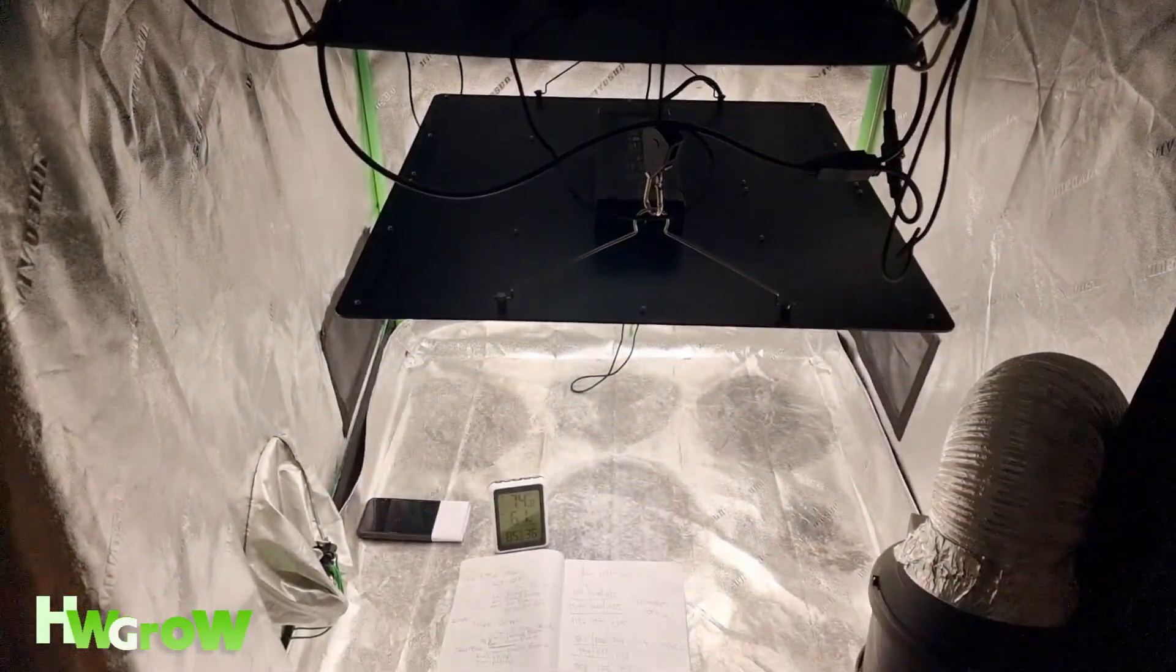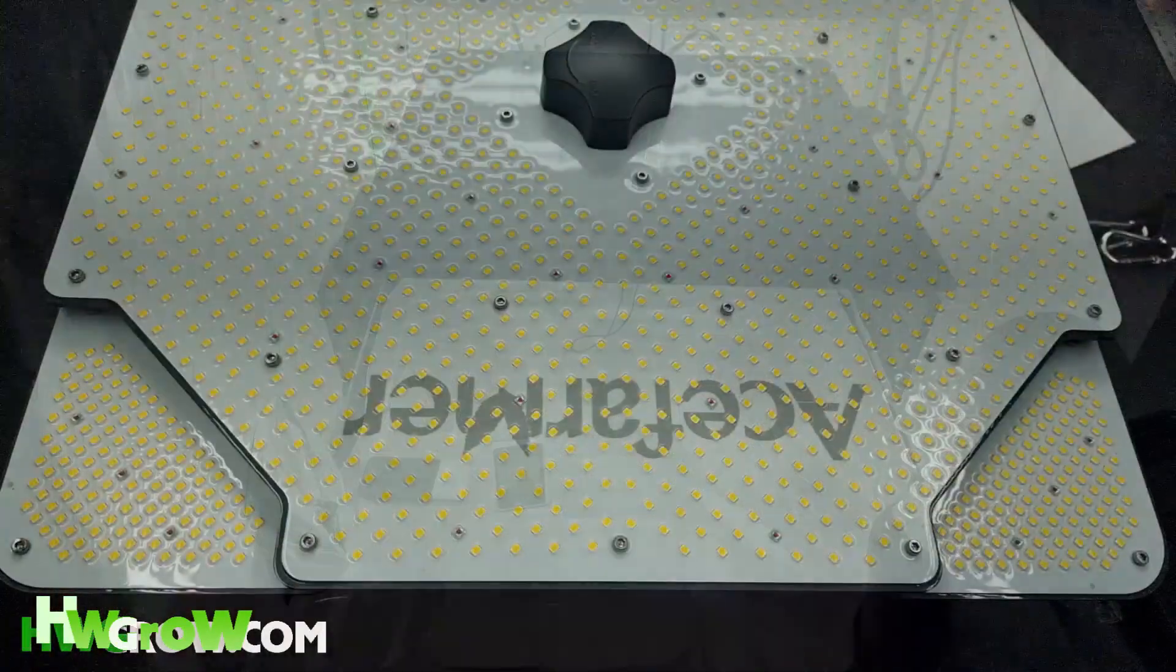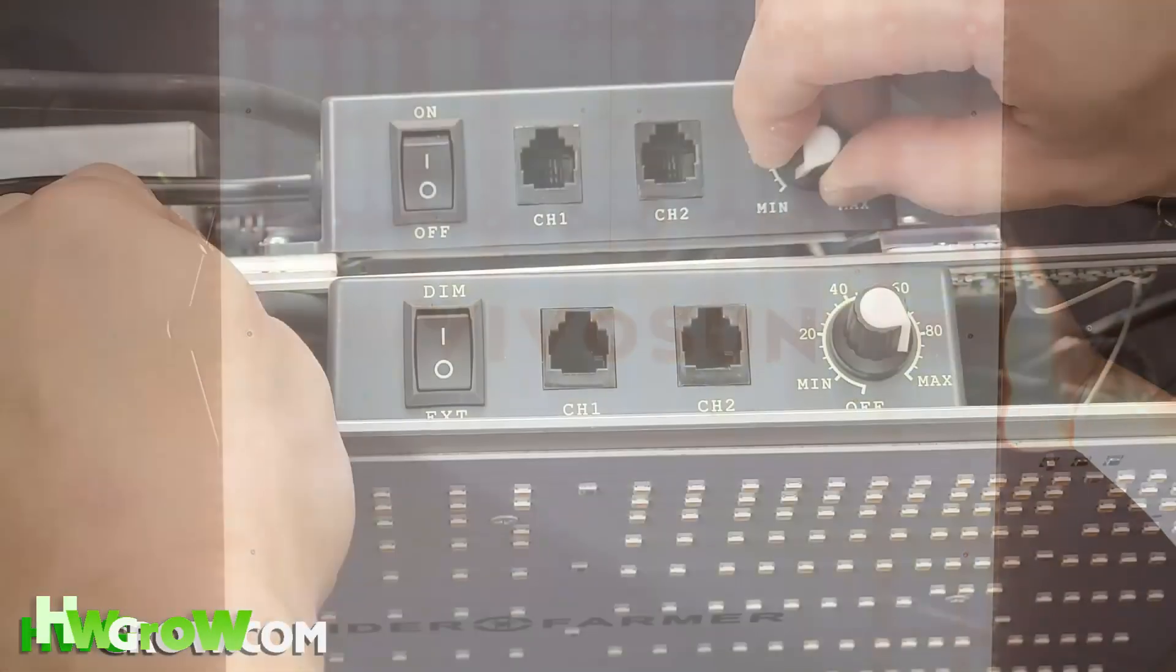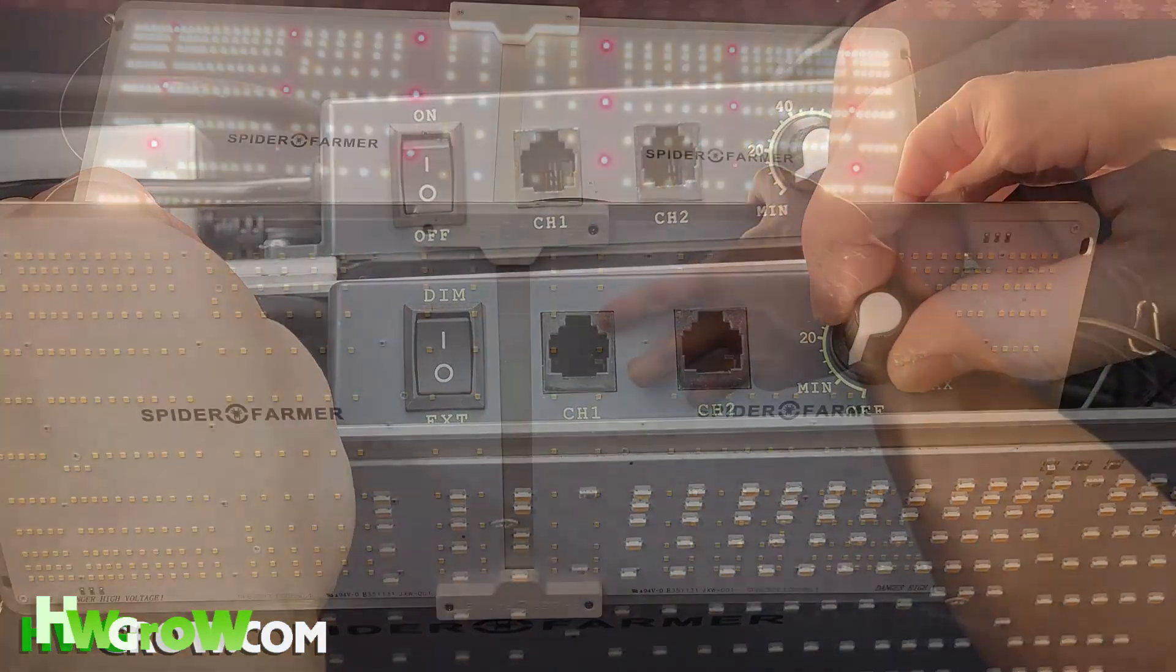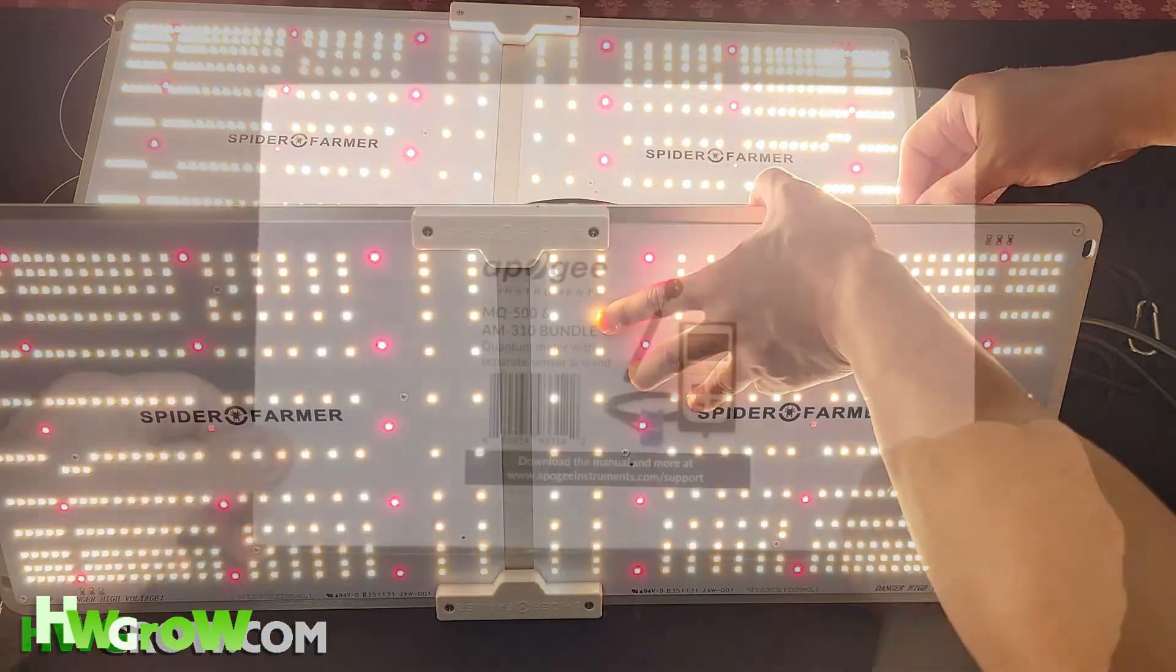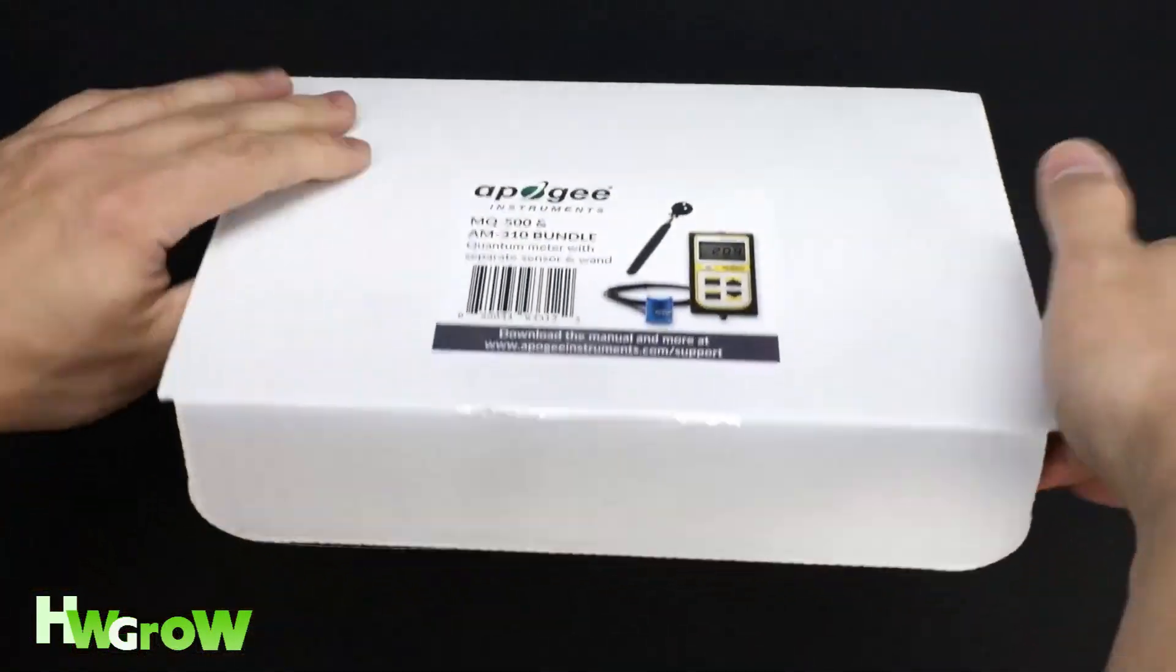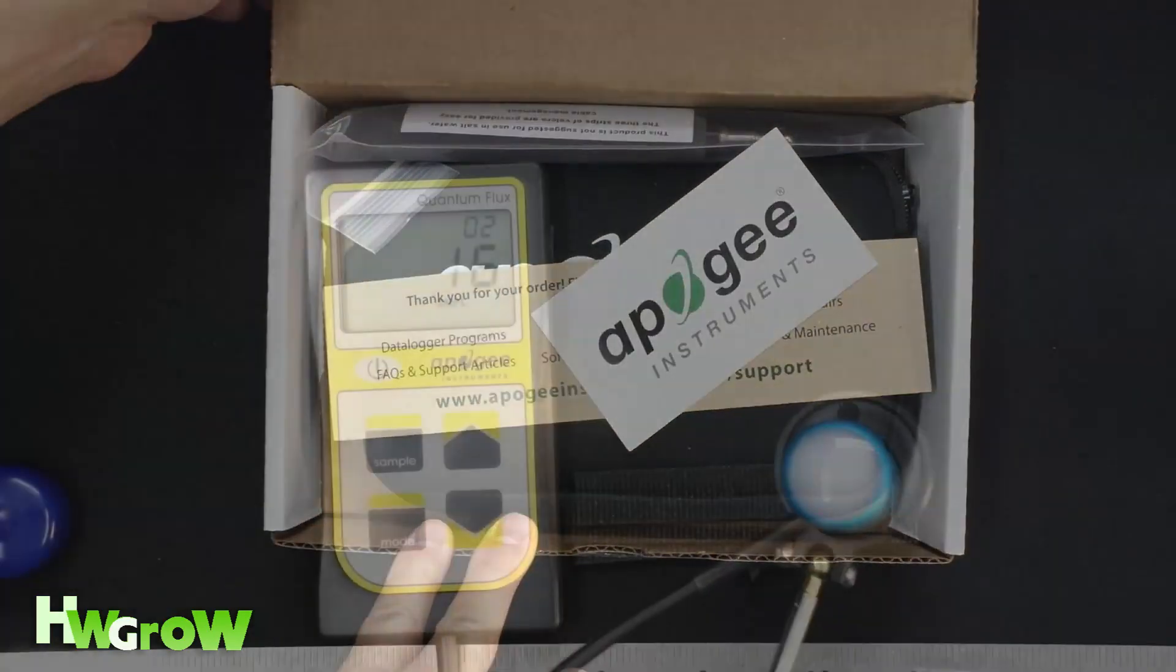If you watch my how to pick a light video, you know I prioritize results over everything, but that's not to say efficiency doesn't matter. Having accurate light readings is vital for setting your light intensity, so I got this Apogee MQ500.